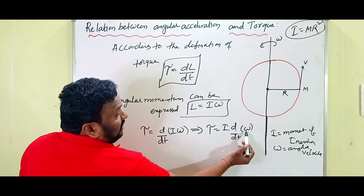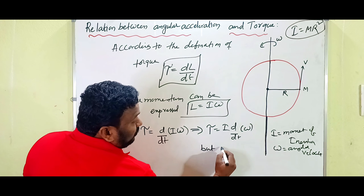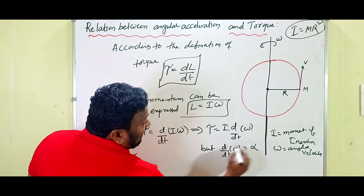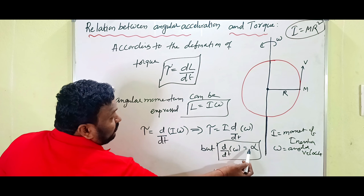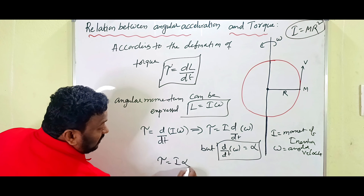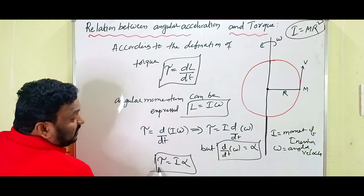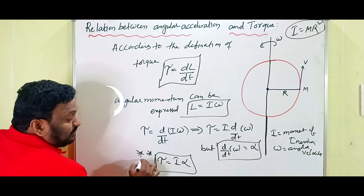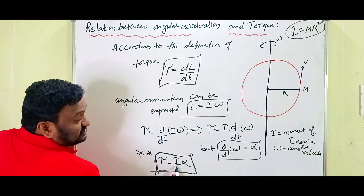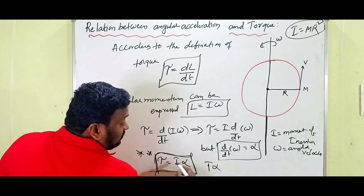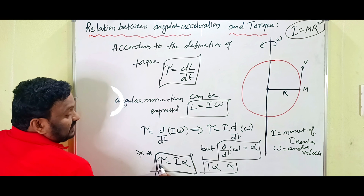Now, dω/dt is the rate of change of angular velocity, which is the angular acceleration α. Therefore, substituting: τ = Iα. Here, α is the angular acceleration and τ is the torque. This equation represents the relation between torque and angular acceleration. When I is constant, torque is directly proportional to angular acceleration.